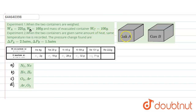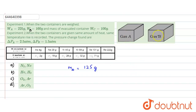The mass of the evacuated container is given as 100 grams. When we don't have gas A, the mass is 100 grams, and when we don't have gas B, the mass is also 100 grams. So the mass of gas A equals total mass 225 minus 100, which is 125 grams. The mass of gas B equals 160 minus 100, which is 60 grams.